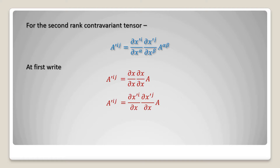We need to give the primes in the numerator because we are writing the contravariant tensor. So del x prime i and del x prime j will be in the numerator. In the next step, a prime ij equals del x prime i divided by del x alpha into del x prime j divided by del x beta into a alpha beta. Alpha and beta can be replaced by any other suffix other than i and j.